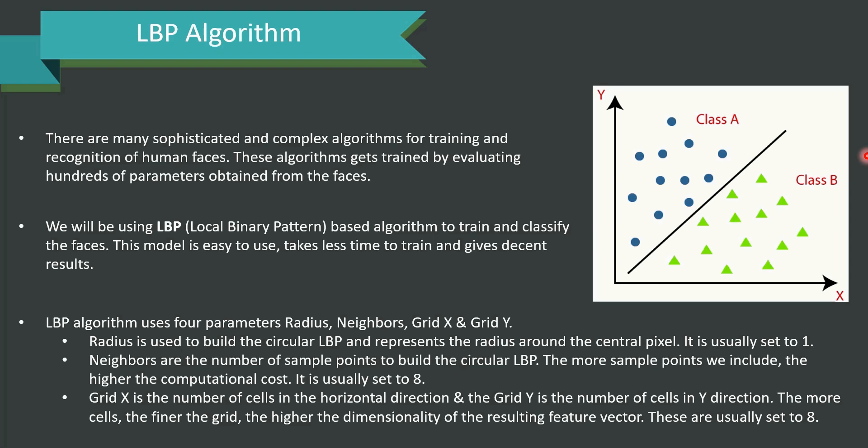The radius is used to build the circular LBP and represents the radius around the central pixel. It is usually set to 1. Neighbors are the number of sample points to build the circular LBP. The more sample points we include, the higher the computational cost. It is usually set to 8. Grid_x is the number of cells in the horizontal direction and grid_y is the number of cells in the y direction. The more the number of cells, the finer the grid. Also, the higher the dimensionality of the resulting feature vector. They are usually set to 8.